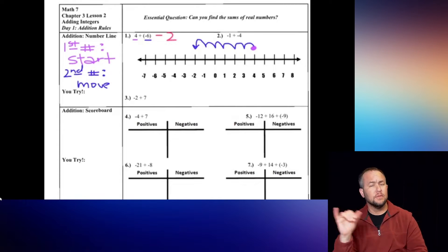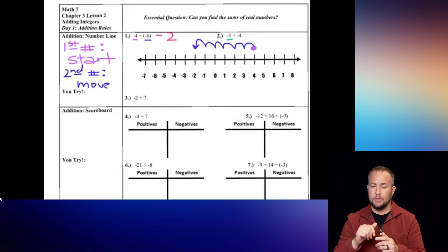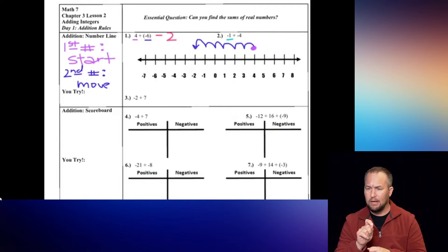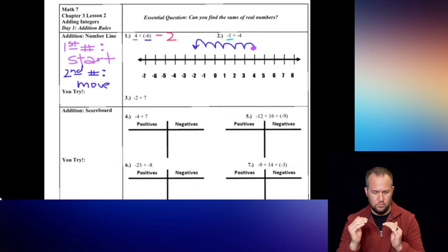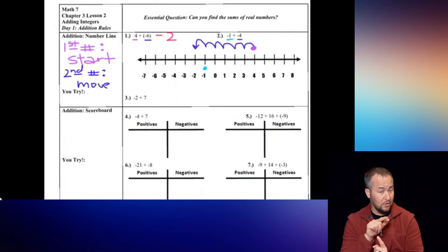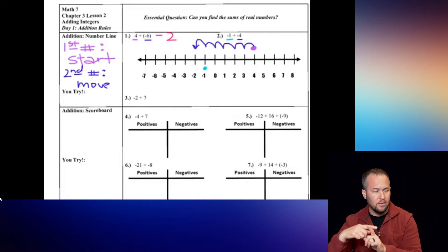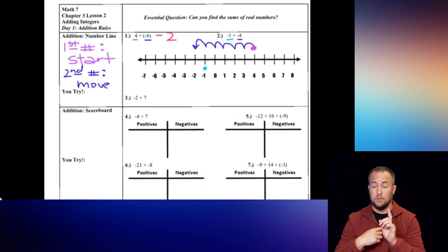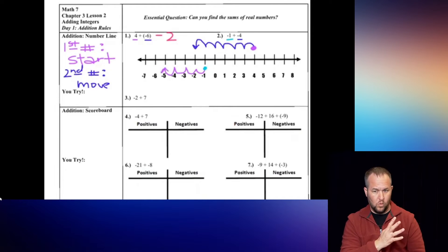Using that same idea, we're going to do the next example. Number 2 says negative 1. You can use the bottom of the number line if needed — start at negative 1, and the second number tells us direction and how many spaces. It's negative, so we go left 4 spaces. Going 1, 2, 3, and 4, we end up at negative 5.